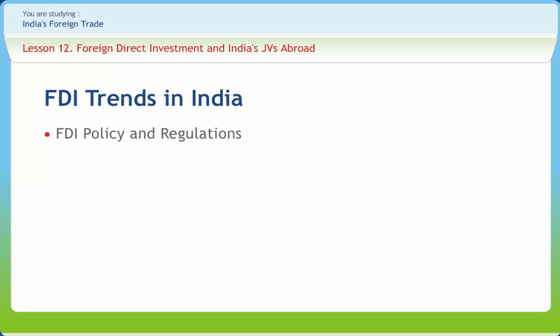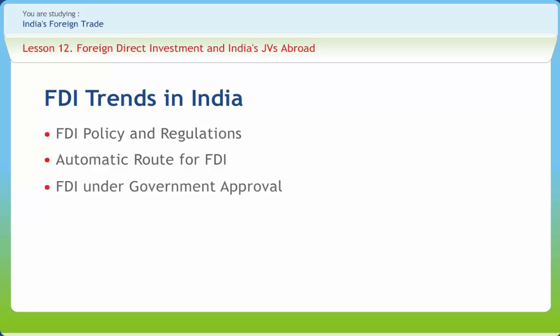Foreign investment in sectors permitted under the automatic route does not require any prior approval either by the government or the RBI. Foreign investment in activities not covered under the automatic route requires prior government approval. Approvals of all such proposals, including composite bids involving foreign investment and foreign technical collaboration, are granted on the recommendations of the FIPB.